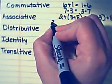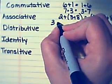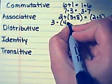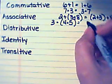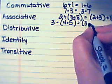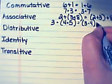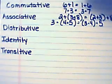You could have 3 times the product of 4 and 5, or you could have the product of 3 and 4 times 5, and it wouldn't make a difference.